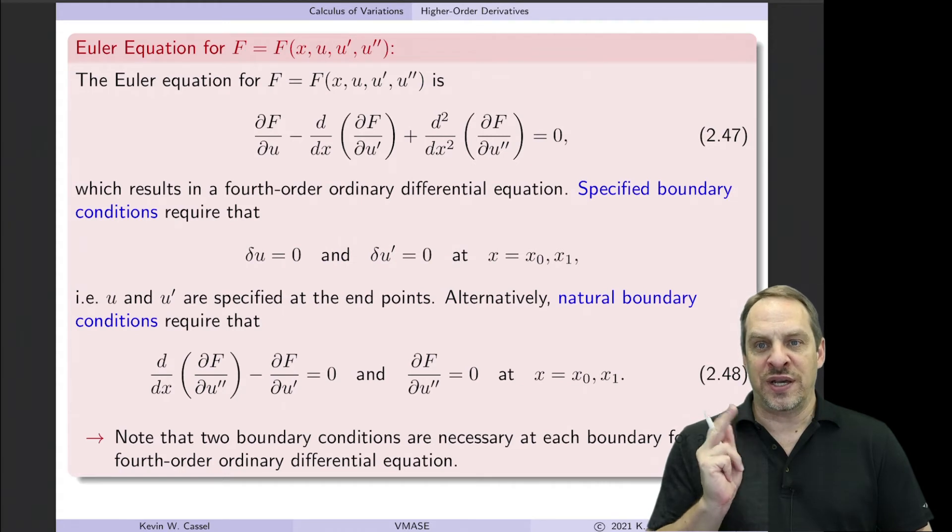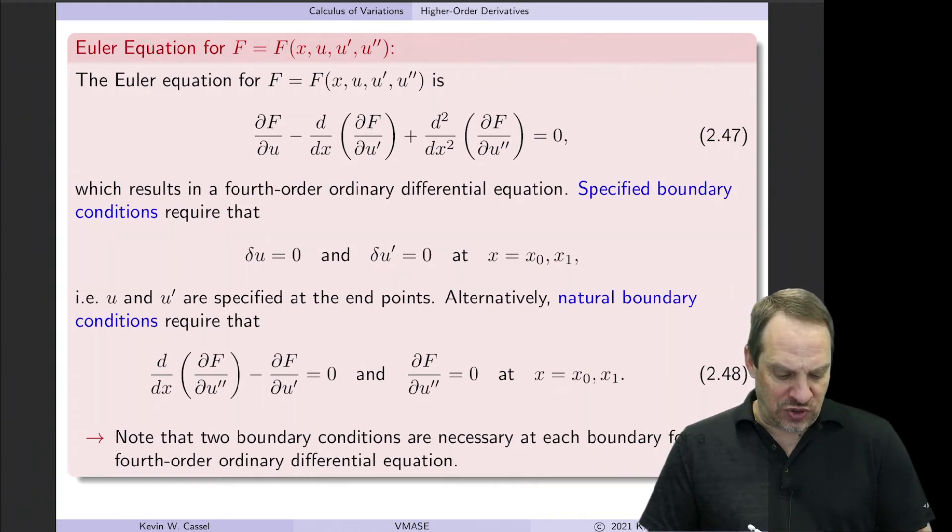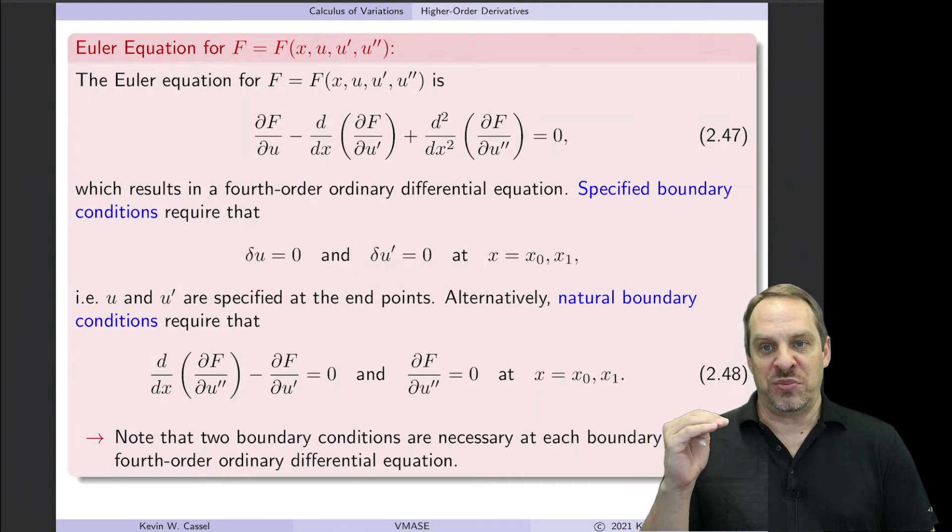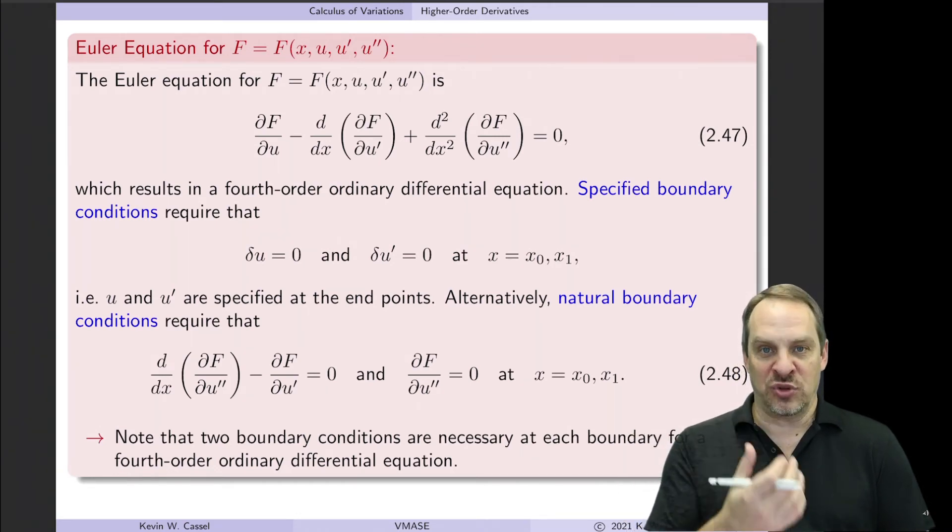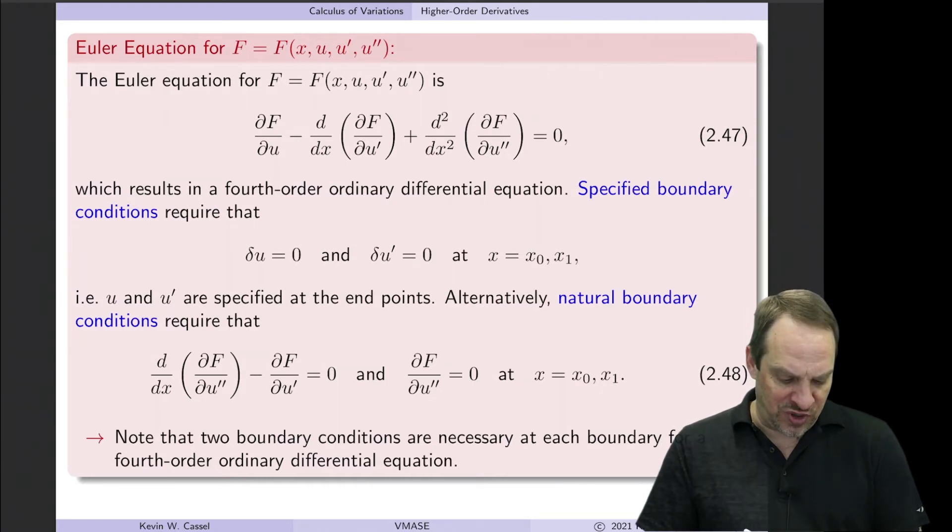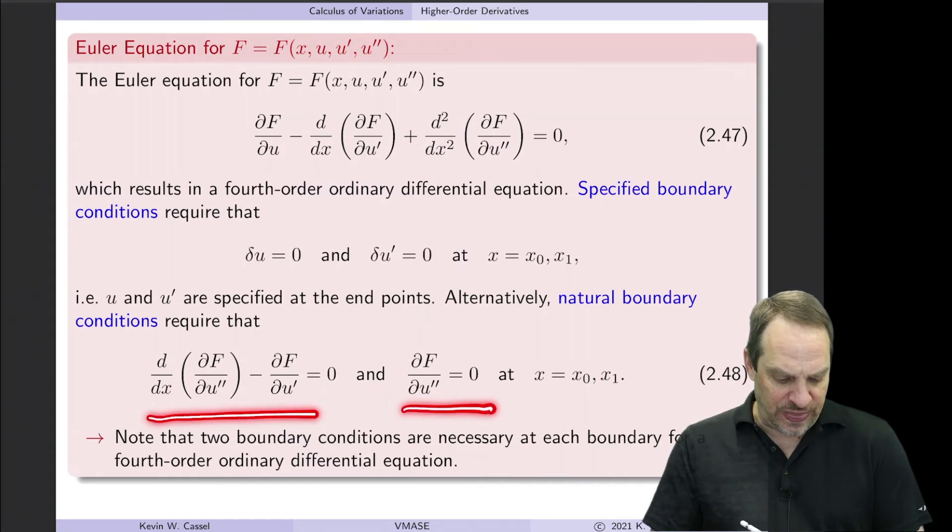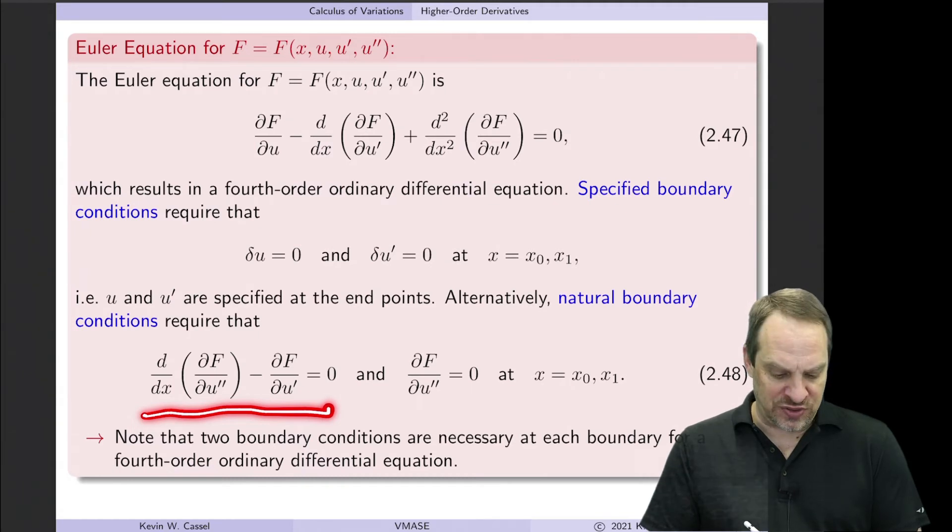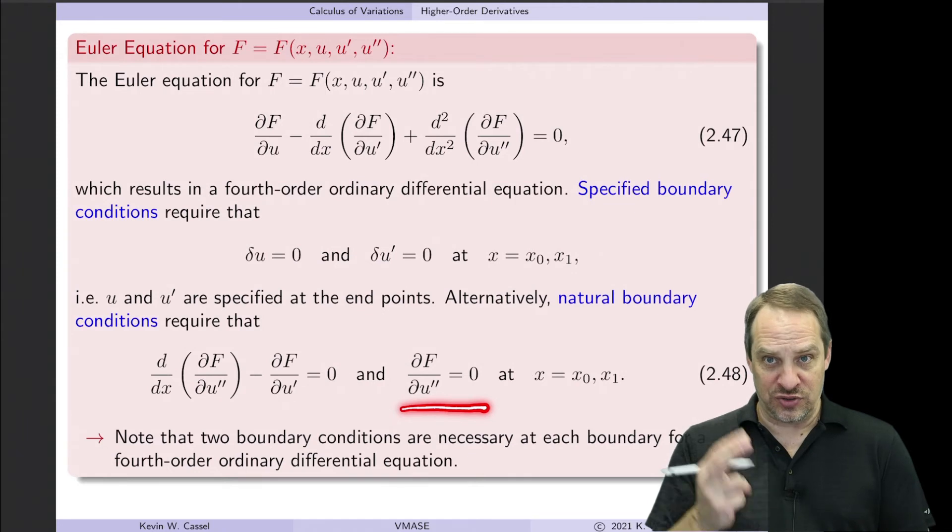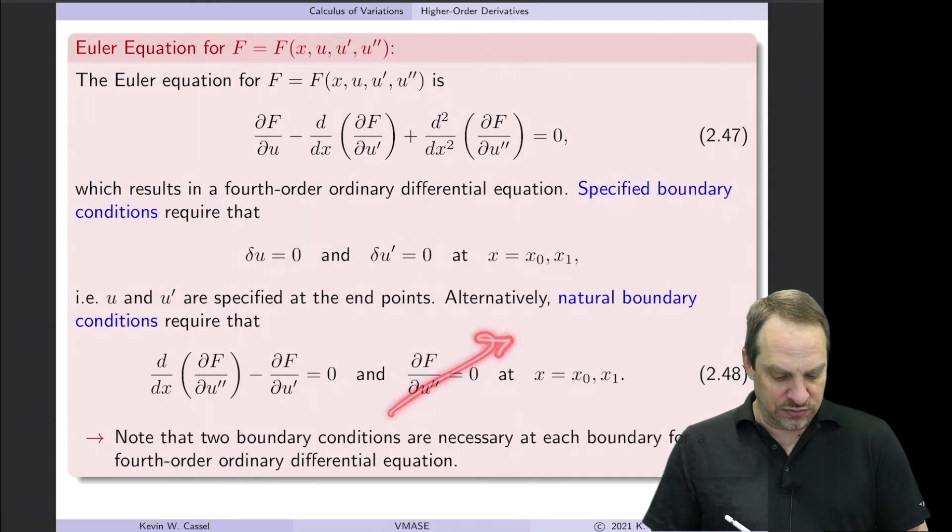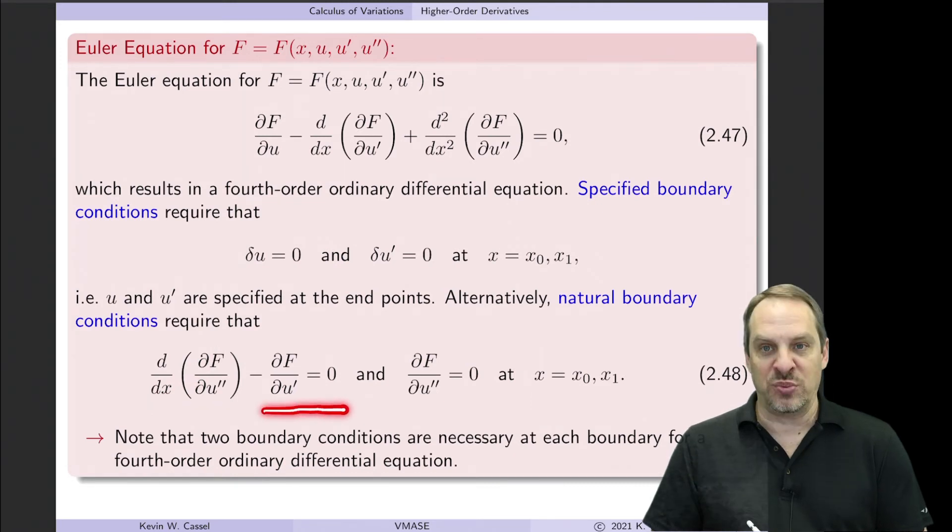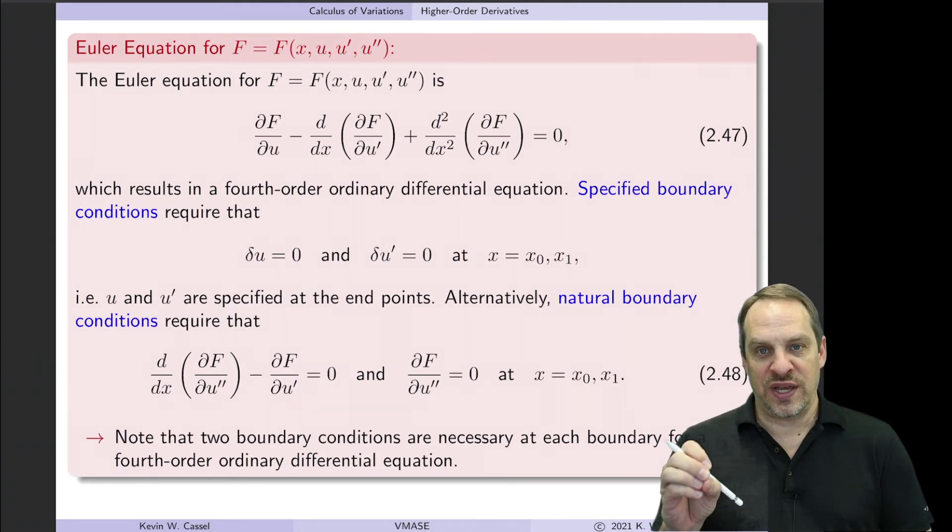Now this is a fourth order equation. So we need to have two boundary conditions on both ends of the domain. So they could be specified: u would be known and u prime would be known. So for a beam case, that would be the position and the slope are both known at the boundary. If that's not the case, then you have to apply natural boundary conditions. The natural boundary conditions arise naturally out of the derivation. And what you find are these two natural boundary conditions: d/dx of partial F partial u double prime minus partial F partial u prime equals zero, and partial F partial u double prime equals zero. Again, two boundary conditions at both ends. If I don't have a u double prime term, then this one is gone and this term is gone, and I just end up with partial F partial u prime equals zero as my natural boundary condition at the boundary.